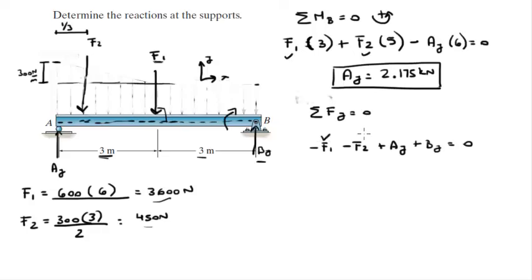You have F1 already, you have F2 already, we found them, 3,600 and 450, and we just found AY just a second ago. So you go ahead and replace it, and then the only variable that you have is BY, and you go ahead and you solve for BY, and you get that BY is equal to 1.875 kilonewtons.